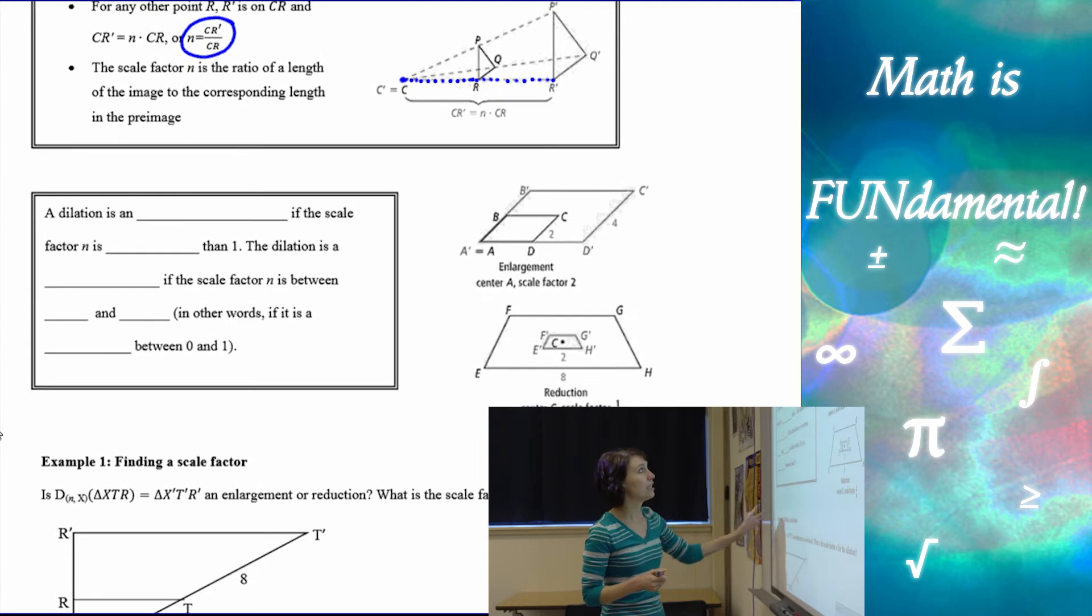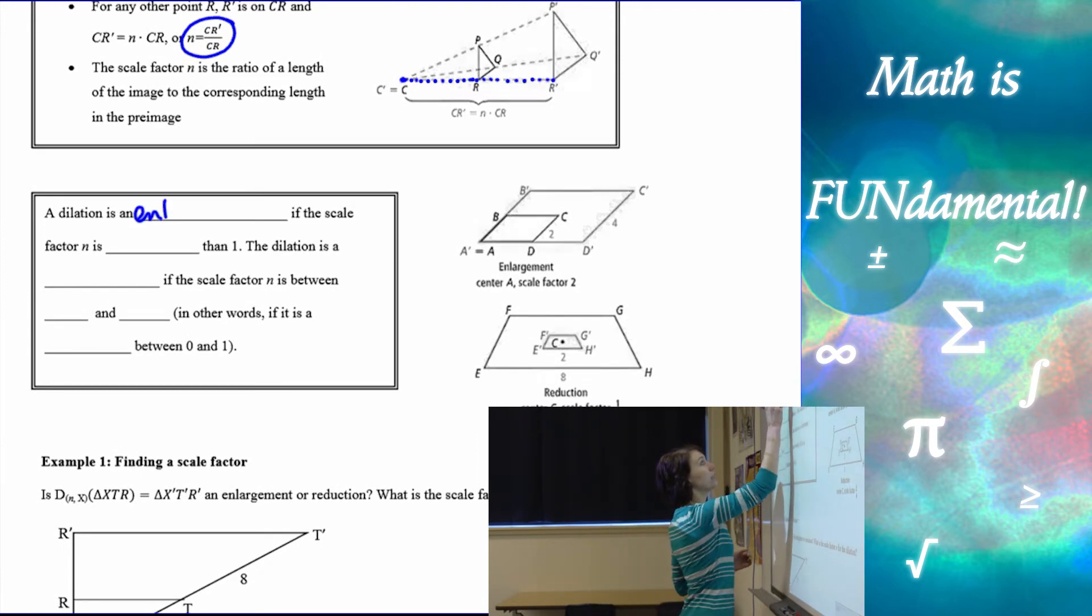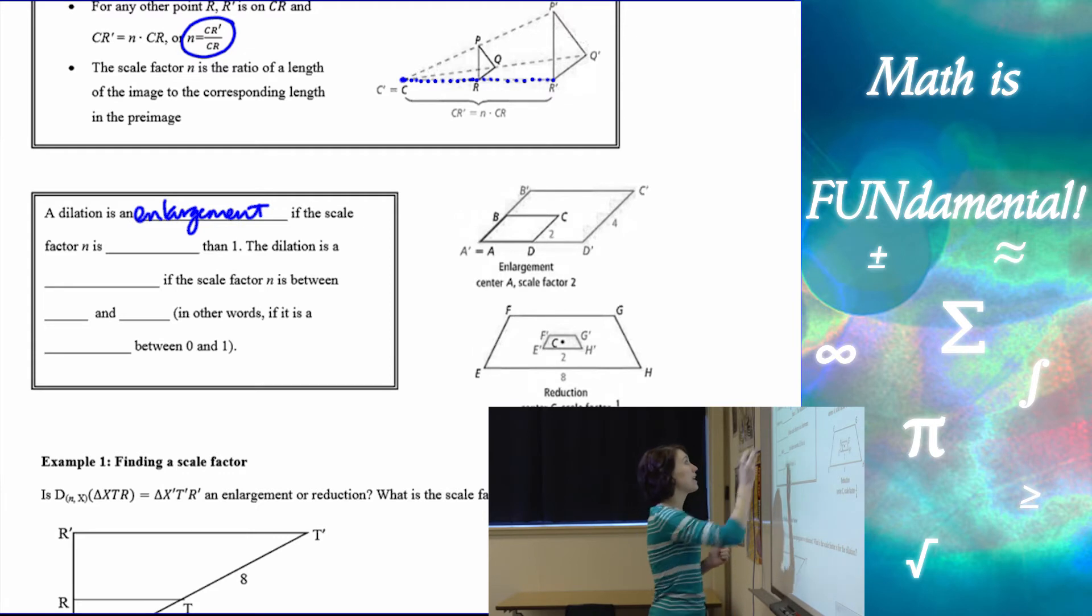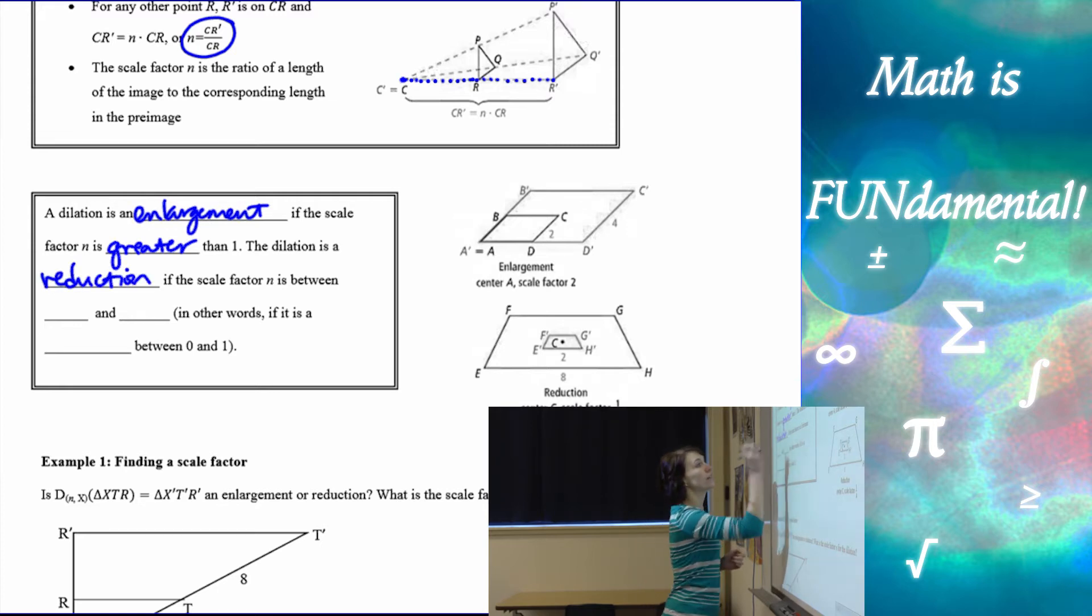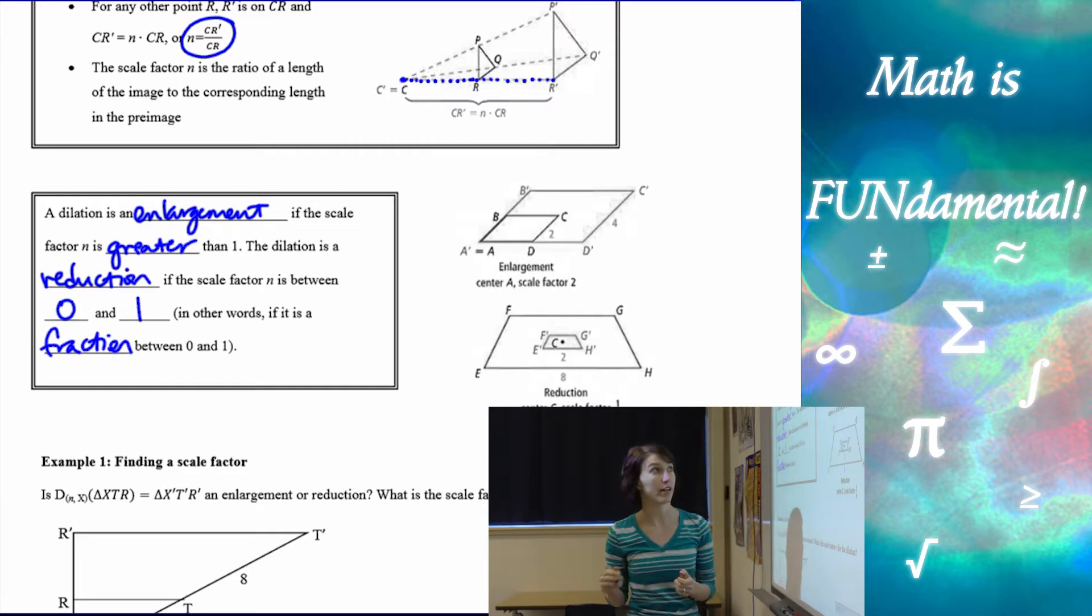Now a dilation is an enlargement if the scale factor is greater than 1. The dilation is a reduction if the scale factor N is between 0 and 1, or in other words, if it's a fraction between 0 and 1.